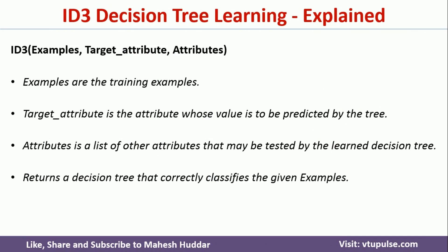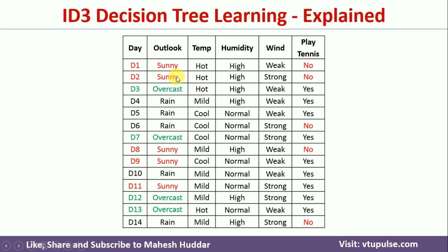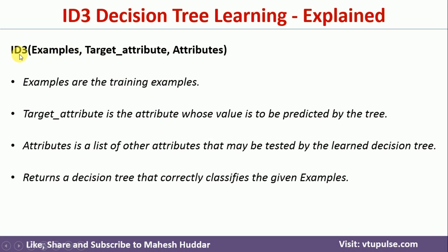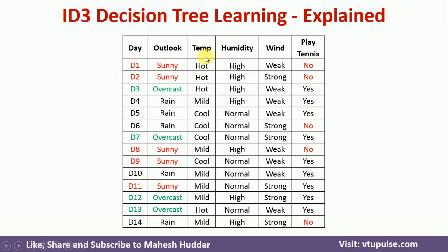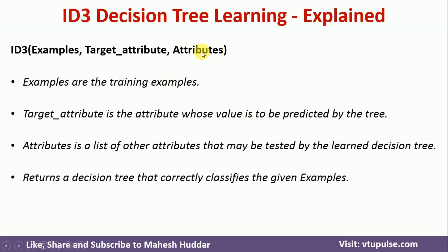The ID3 algorithm is a recursive kind of algorithm. We need to pass three things: the examples, the target attribute, and the attributes. For example, if you consider this dataset, we have 14 examples — that will be the first parameter. The second one is the target attribute; in this case, we have 'play tennis' as the target attribute. The third parameter is the attributes — how many there are and what they are.